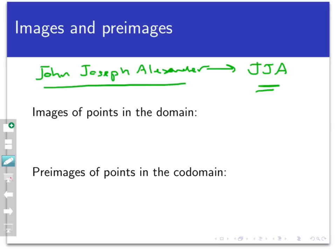Now what about preimages of points in the codomain? So pick an element out of the codomain, like let's say R, N, T, and ask yourself, could I put something into this initials function to get that as an output? Does R, N, T actually have a preimage at all? If it does, then I should be able to fill into this blank here the name that produces that three-letter combination. It may have more than one. John Joseph Alexander, for example, would be a preimage of J, J, A.